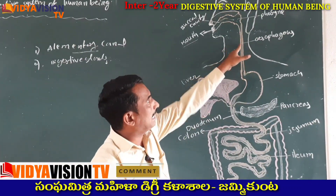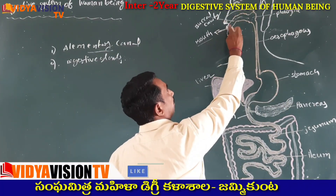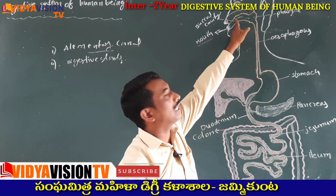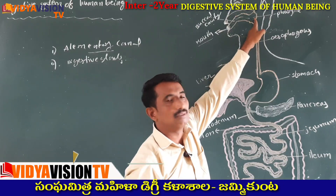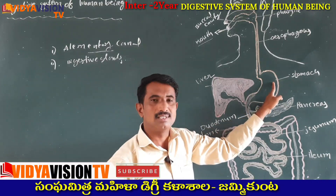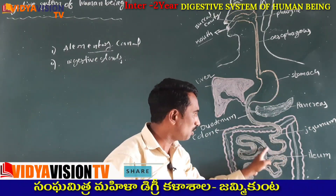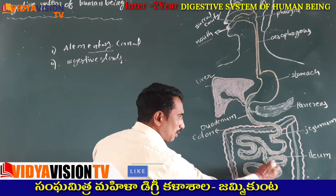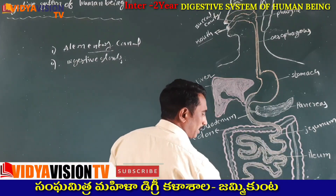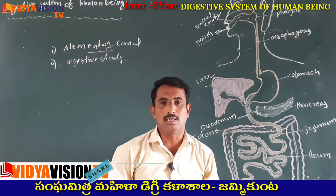Now the parts of the alimentary canal: the mouth opens into the buccal cavity, also known as the oral cavity. The oral cavity opens into the pharynx, then after the esophagus, it leads to the stomach. The stomach opens into the small intestine, and finally the small intestine opens into the large intestine. The large intestine opens outside through the anus.